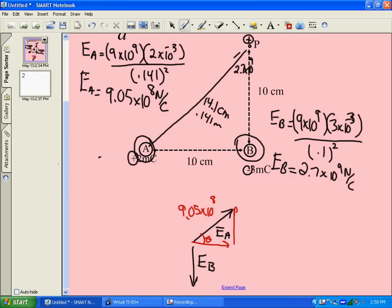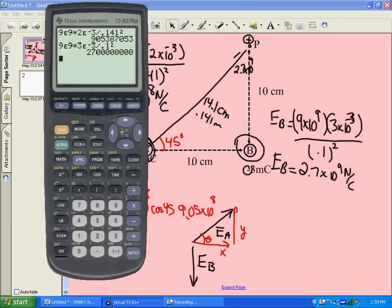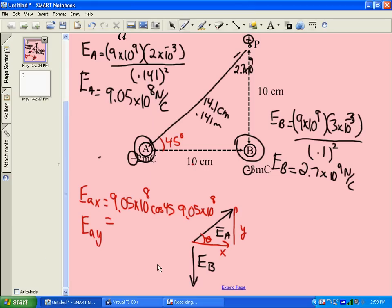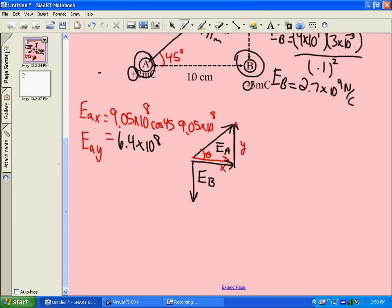So to get the x and y components of EA, we would call it EAx and EAy. 9.05 times 10 to the 8 times for x, you would have the cosine of 45. Okay, so we're going to take the 9.05 times 10 to the 8, and we're going to multiply that by cos of 45, and we get 6.4 times 10 to the 8. And since it's an isosceles triangle, 45 degrees means the two sides are equal. So we have 6.4 times 10 to the 8 here, and 6.4 times 10 to the 8 there.